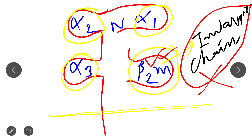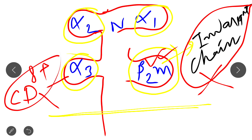Alpha 3 is the site where the CD8 molecule — the CD8+ molecule — basically binds. The CD8 membrane molecule, which is present on TC cells, basically binds at this site, that is alpha 3.